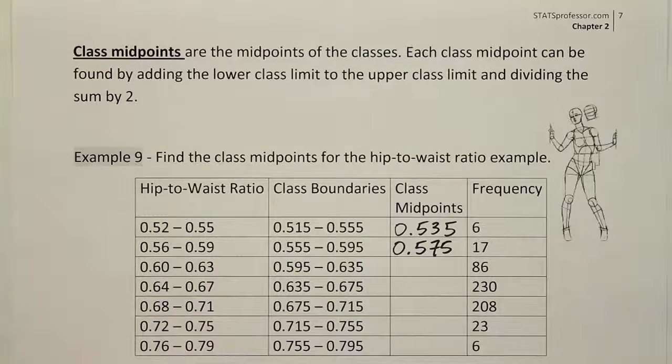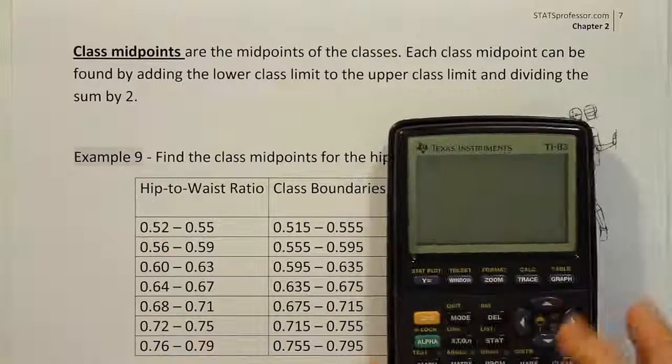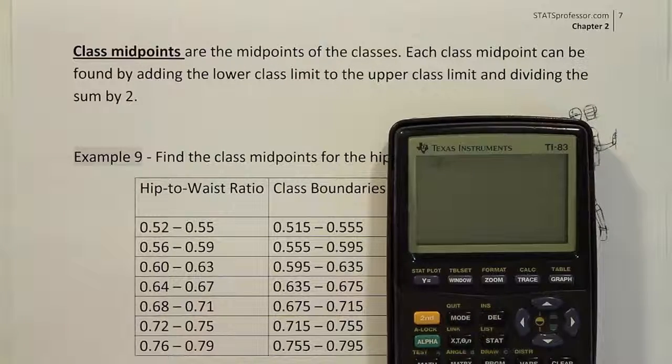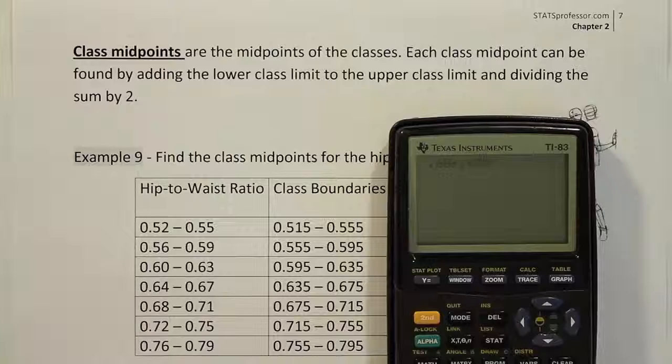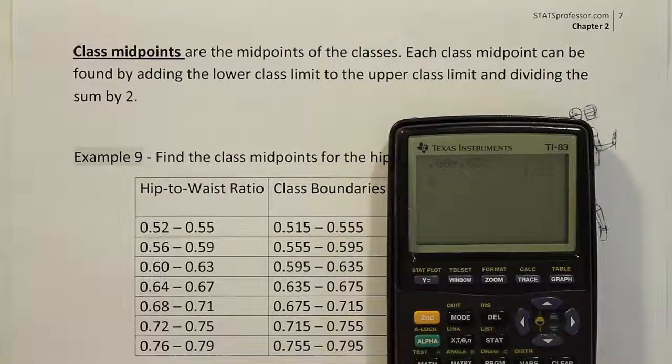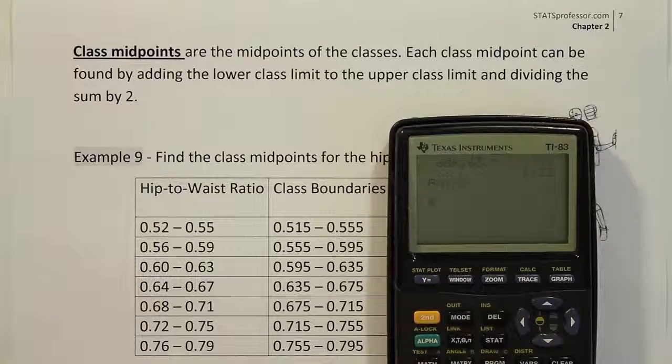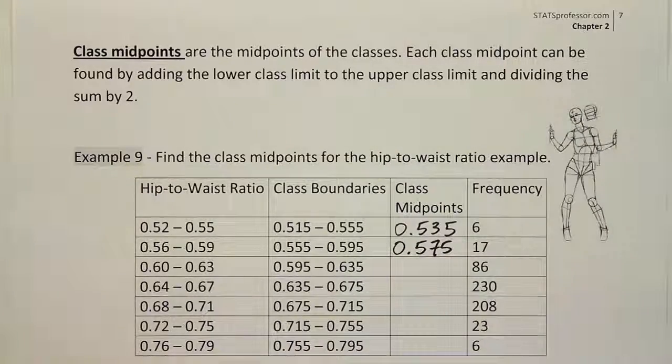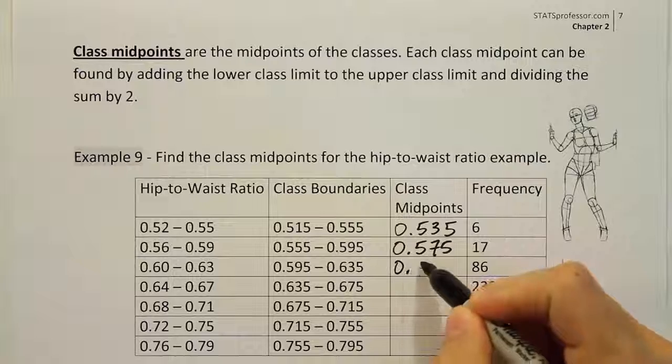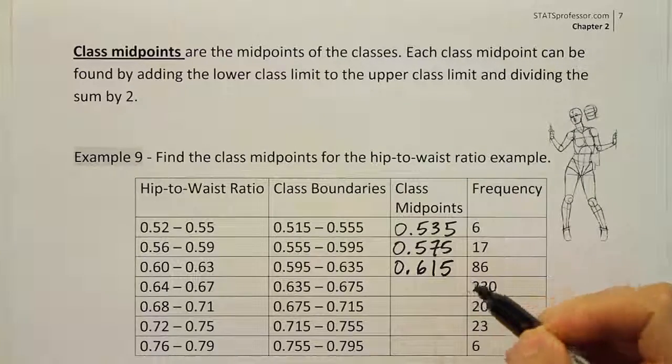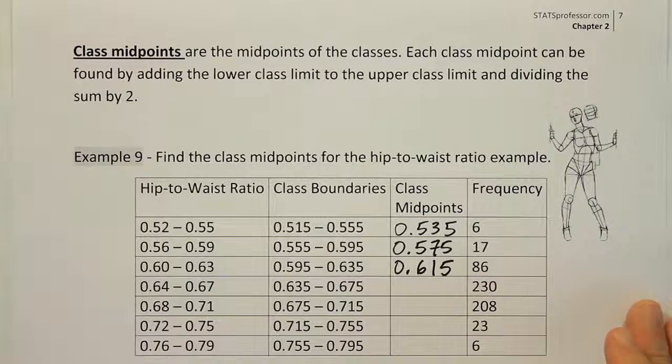Let's do this one together. So we're going to add .60. We'll take .60 and we'll add that to .63, and then we will divide the sum by 2. And we get the answer .615. So that'll be our third class midpoint, 0.615. Okay, so that's our third class midpoint.